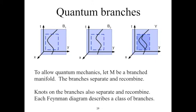We have seen a little bit about quantum mechanics and how it relates to the branches of M. This diagram shows us the simplest case of a branch manifold with a single particle on it. Now we will elaborate on how to extend this description to the case of many branches and multiple particles.